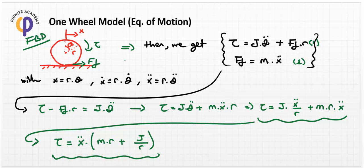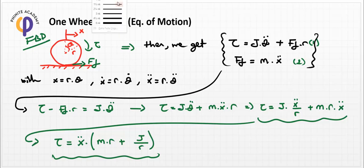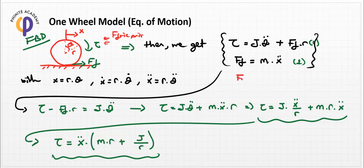However, we also need to add the friction factor coming from air or rotational motion. Without any damping factor, this system would go to infinity. In real-life applications there should always be a damping ratio, represented by the c factor in the system dynamics equation. The air friction force can be given by c times x-dot, the translational velocity.